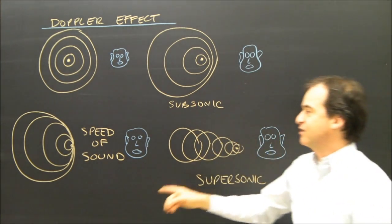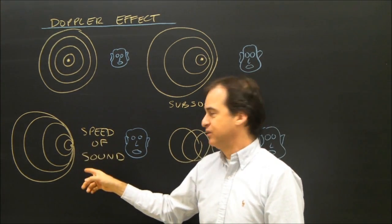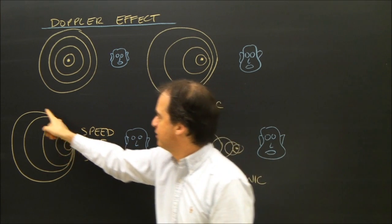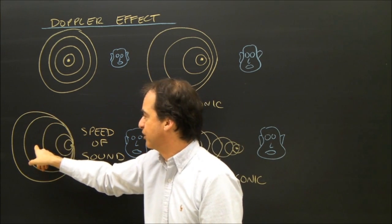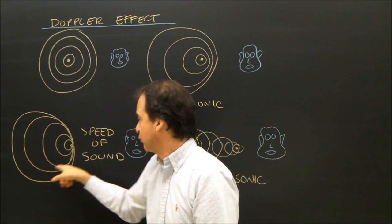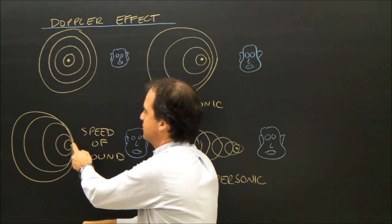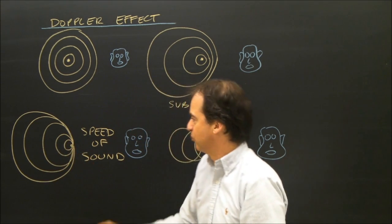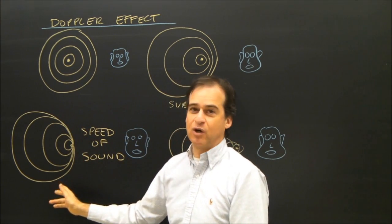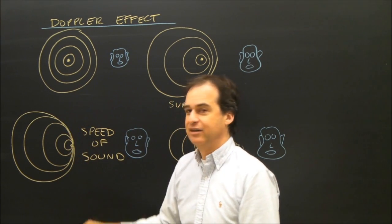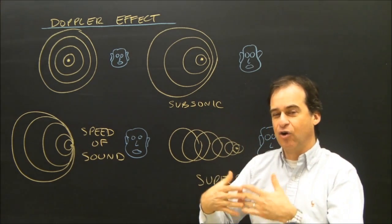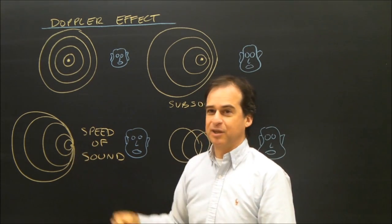Now if the object actually travels the speed of sound, then as it's moving, it created this circular wave when it was over here. And then it created this circular wave when it was over here. At this point, it's over here creating another circular wave. And if you look, all the crests of these waves are bunched together all in the same line. It's as if all that sound energy, all the energy of the sound, is bunched up there.